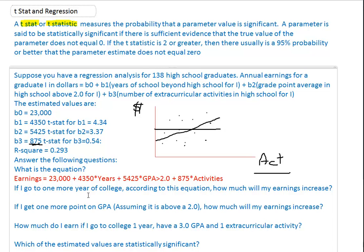Let's go to our next question. If I go to one more year of college, according to this equation, how much will my earnings increase? Well, years of college is right here. And so it looks like, what, 4,350? So 4,350, which is the parameter for B1. And B1, remember, is our years of college. Or there it is, years right there. So make sure you, be very careful you put the right parameter down. So $4,350 for one year of college.